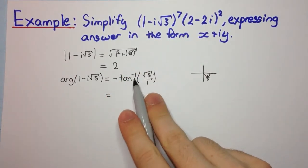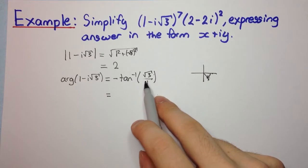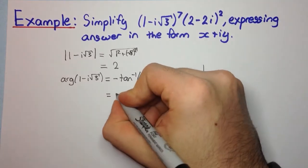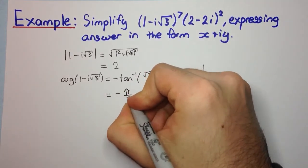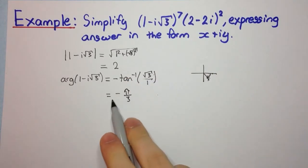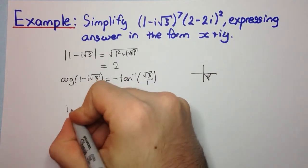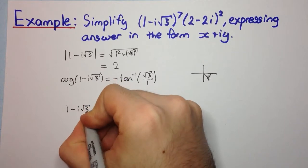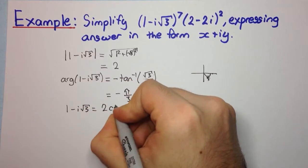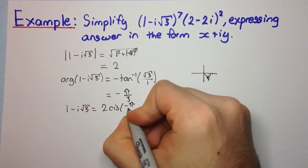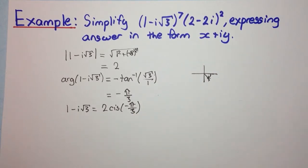And that's tan inverse of √3, which is 60 degrees or π/3 radians, and we have our minus out the front, so it's -π/3. And so therefore, 1 - i√3 can be written as 2 cis(-π/3). So that's how we write it in mod arg form.